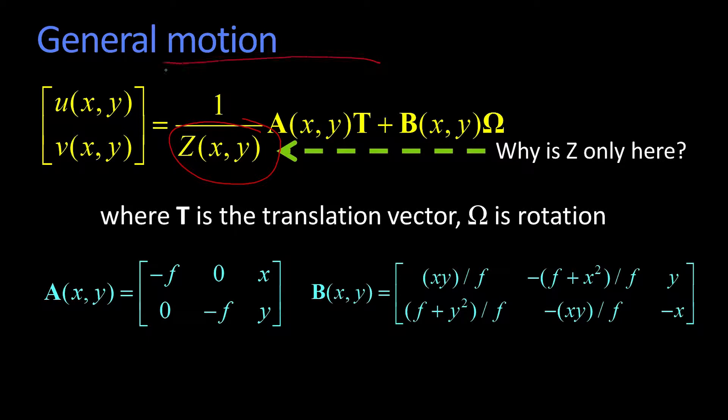You'll notice that this thing is made up of two terms, the a term and the b term. The a term has the translation in it, the b term has the rotation in it. The depth is only in the a term, the translation term. Why?